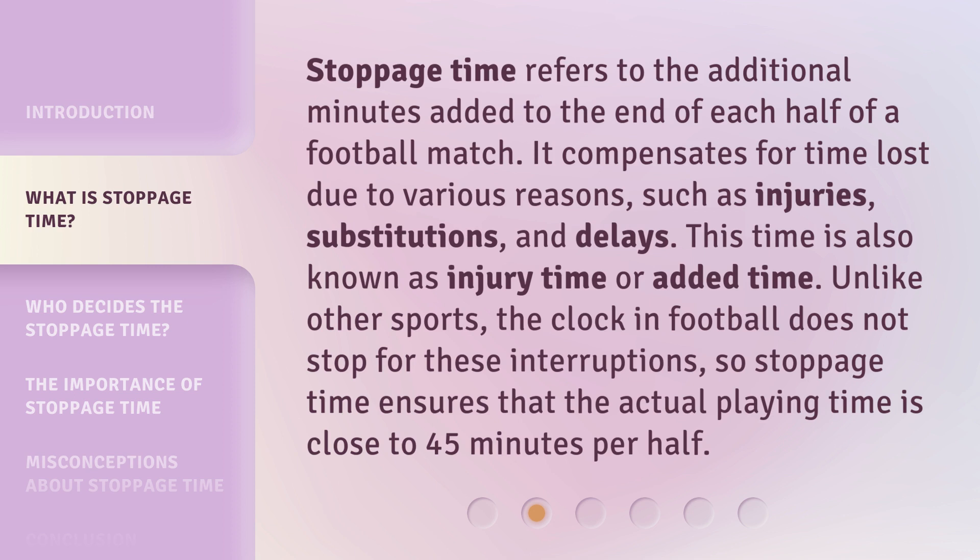Stoppage time refers to the additional minutes added to the end of each half of a football match. It compensates for time lost due to various reasons, such as injuries, substitutions, and delays. This time is also known as injury time or added time. Unlike other sports, the clock in football does not stop for these interruptions. So stoppage time ensures that the actual playing time is close to 45 minutes per half.